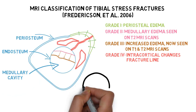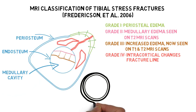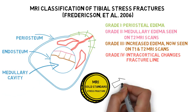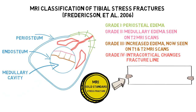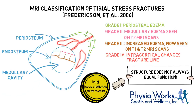Grade 5 is the gold standard for stress fracture imaging. But remember that the grading of stress fracture by MRI does not necessarily correlate with the symptoms. As such, a thorough examination is very important and you should seek out an appropriately skilled professional.